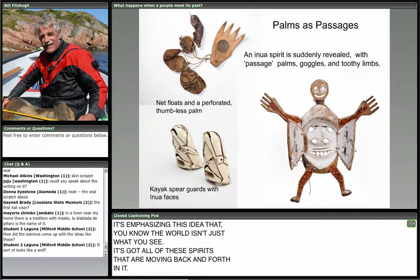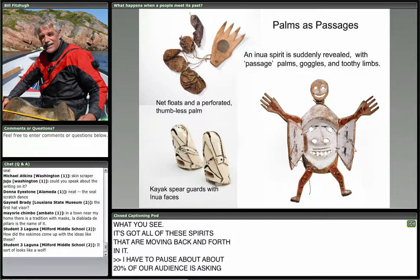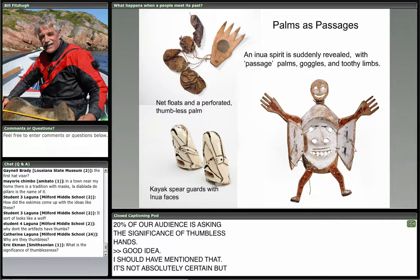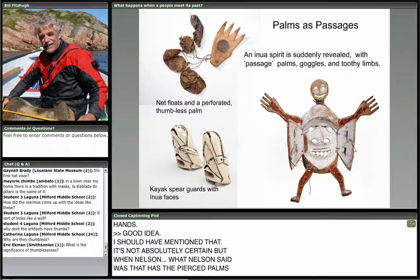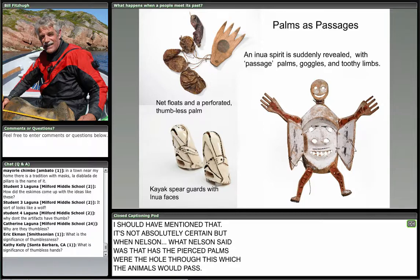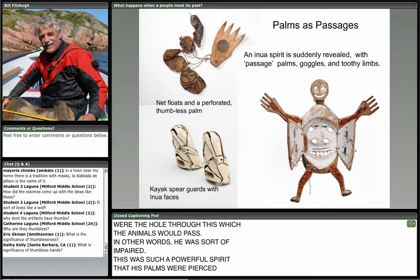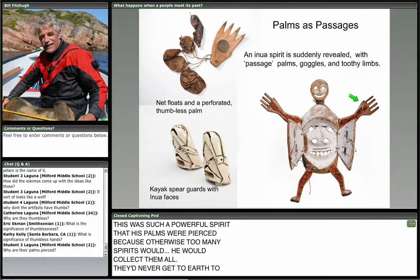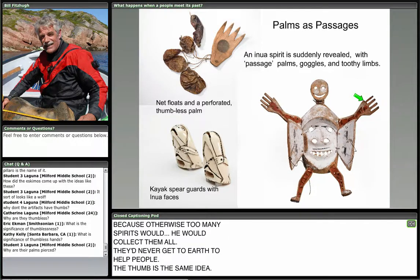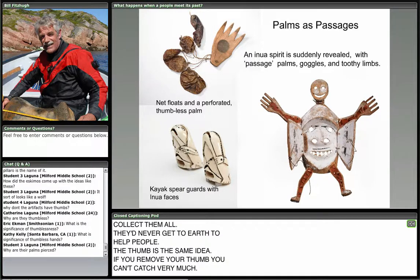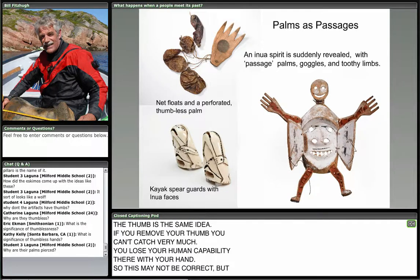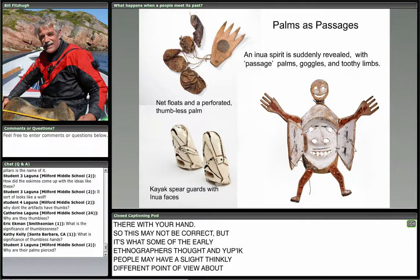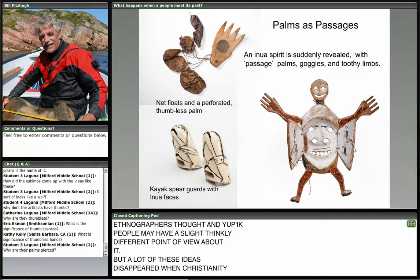Nelson said the pierced palms were the hole through which animals would pass — this spirit was so powerful that his palms were pierced, otherwise he would collect too many spirits and they'd never get to earth to help people. The thumb carries the same idea: if you remove your thumb you can't catch very much — you lose your human capability. This may not be correct, but it's what some early ethnographers thought. Yupik people may have a slightly different point of view, but a lot of these ideas disappeared when Christianity hit this area just after Nelson was there, making it very difficult to understand fully.